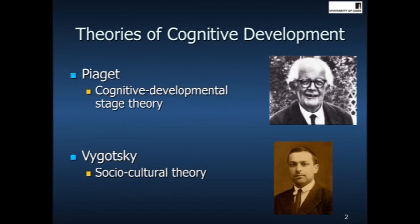Piaget had a cognitive developmental stage theory where he believed that children went through different stages, and we'll look at that in more detail in a minute. Vygotsky unfortunately died at the age of 37 before he had time to complete much of his theory, but he introduced something extra into our ideas of cognitive development and that was the idea of the social environment. So first of all we're going to be looking at Piaget.